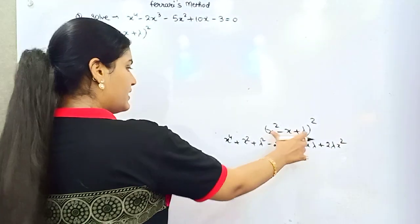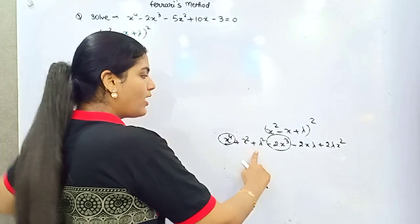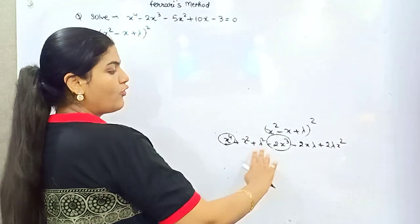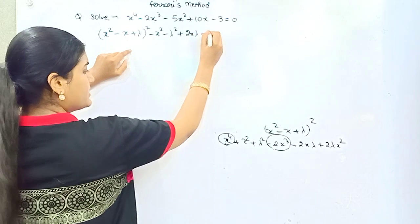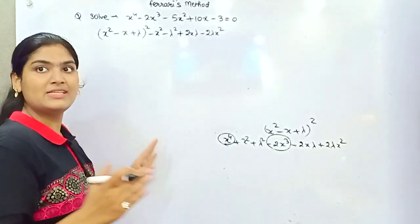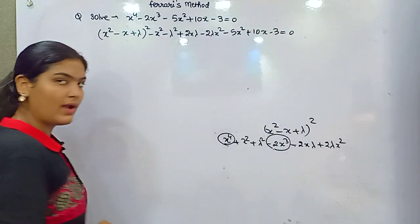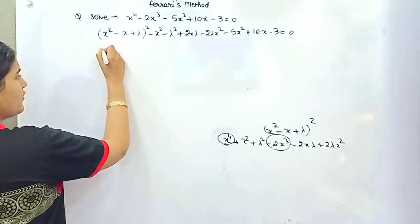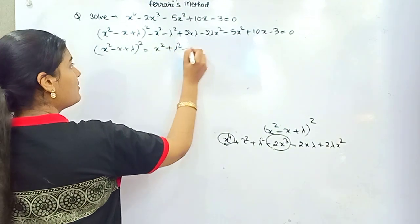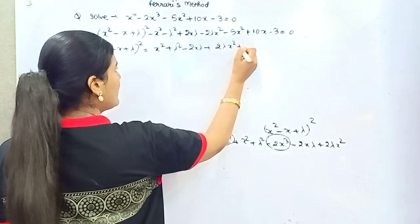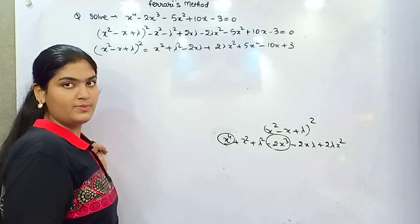What you observe is that this expansion has only two terms matching the original question. All the other terms are extra, so you need to remove them: minus x squared, minus lambda squared, plus 2x·lambda, minus 2·lambda·x squared. Then the rest of the original equation — minus 5x squared plus 10x minus 3 equals 0 — is written here. Now take all the other terms apart from the bi-quadratic onto the right-hand side: x squared plus lambda squared minus 2x·lambda plus 2·lambda·x squared plus 5x squared minus 10x plus 3.